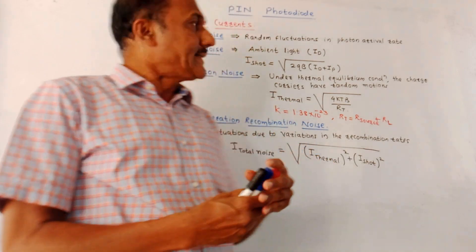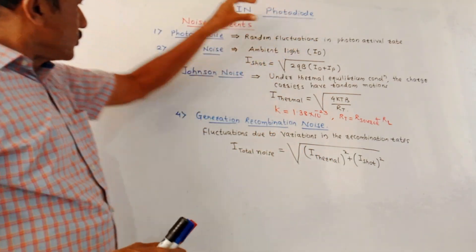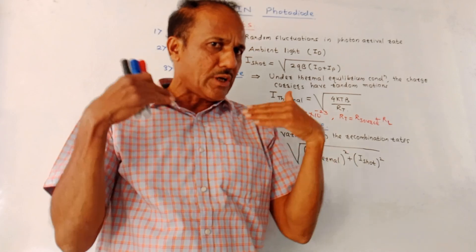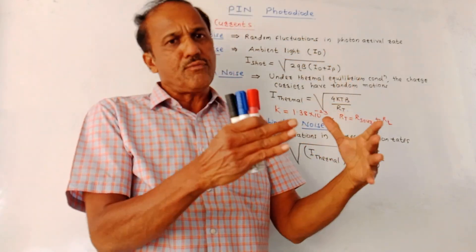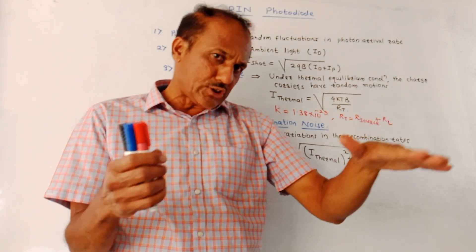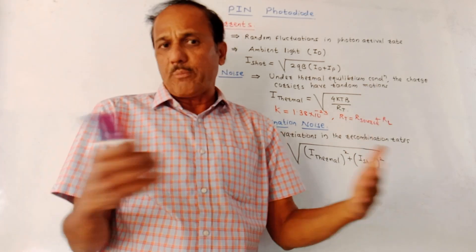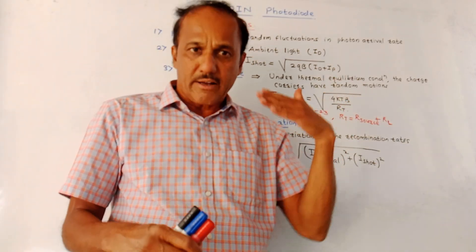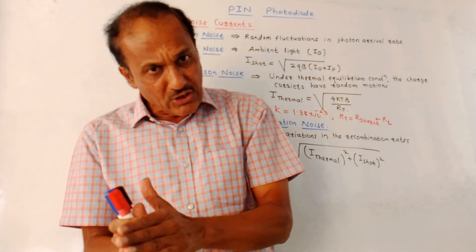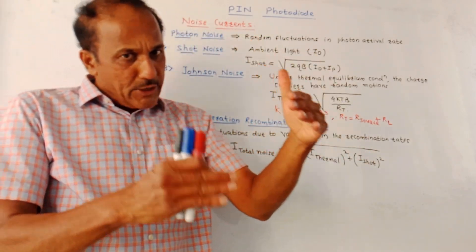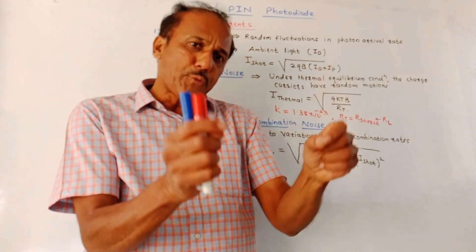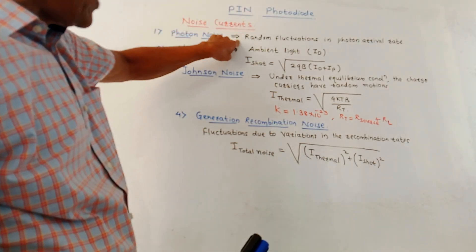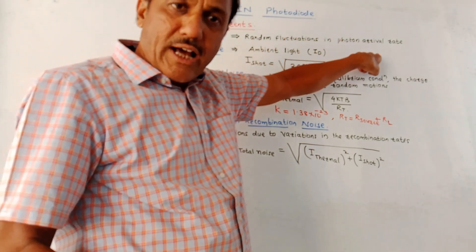Let us discuss the different noise currents in the pin photodiode. The first type is photon noise — noise current produced due to the action of photons. In any photodetector, incident photons cause an output current, but all photons do not arrive at the same time. There are random fluctuations in the arrival rate of incoming photons, causing fluctuations in the output current, which represents photon noise.